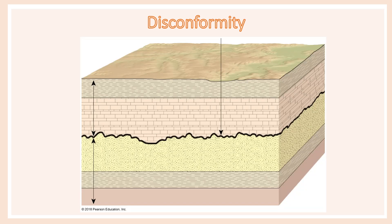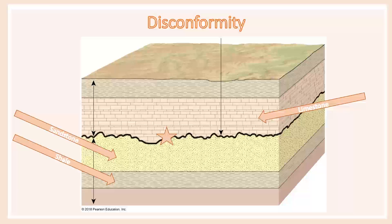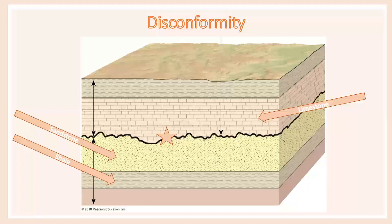Now for the last one: disconformities — a little trickier. First we have our shale and sandstone, then we have our disconformity, which is a nonparallel plane between the sandstone and the limestone on top. All of these units are parallel and horizontal, and all of them are sedimentary, but there is this nonparallel transition. This nonparallel transition is where the erosion happened. The history here is that a depositional basin was uplifted above sea level, eroded, and then returned to sea level where deposition started back up.